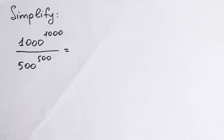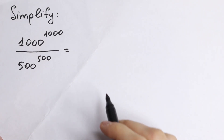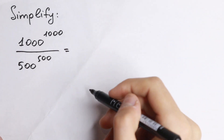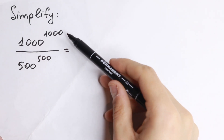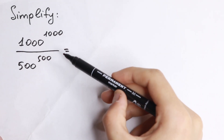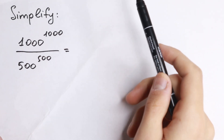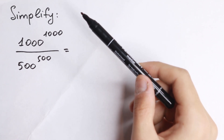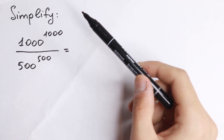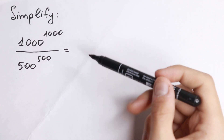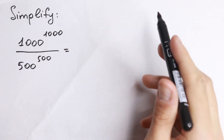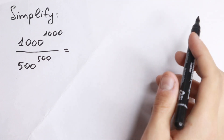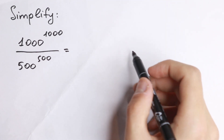Hello everyone! Welcome back to MathMode. We have a really good algebra problem today — we need to simplify this expression. We have a really huge power: 1500. So we need to simplify this and find our answer. This is a really good question because we will learn a lot of really good rules right here.